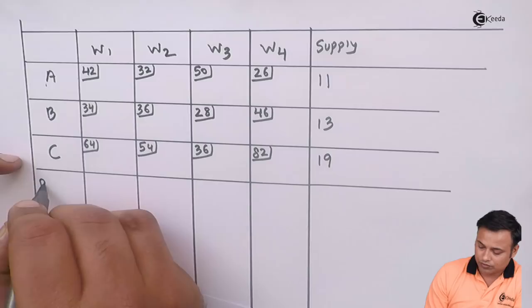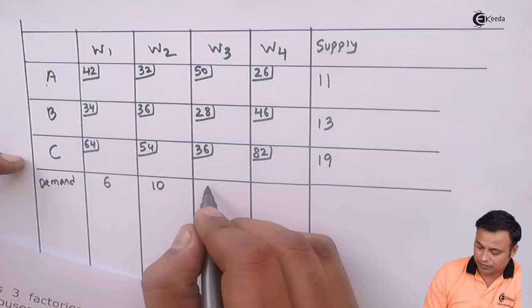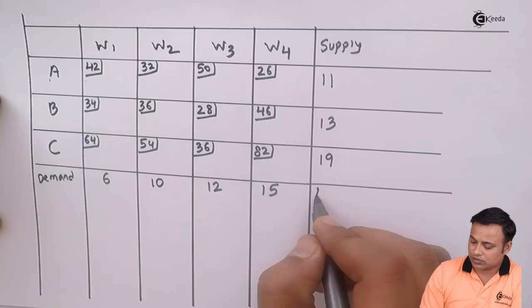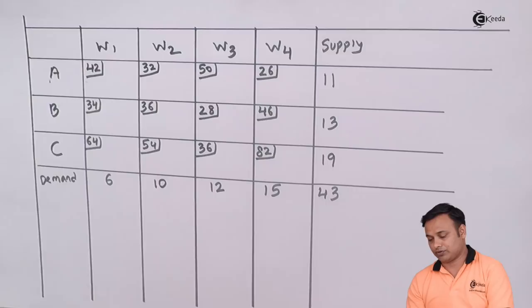Let's check first of all whether the problem is balanced or not. Let's do the totaling from both the sides. It comes to 43 this way, also 43. So the problem is balanced.